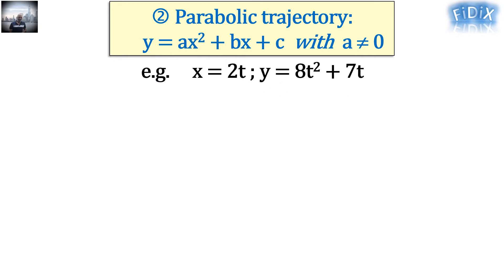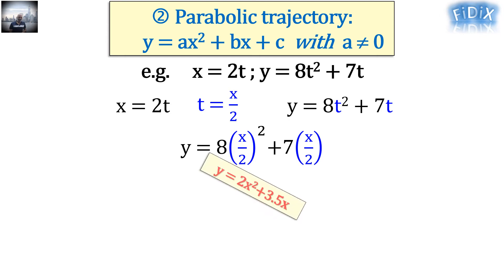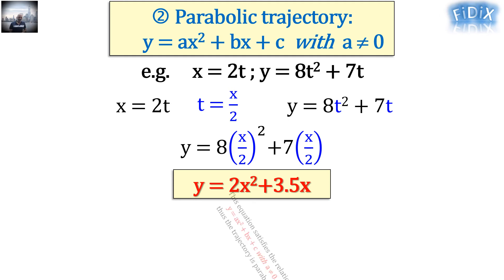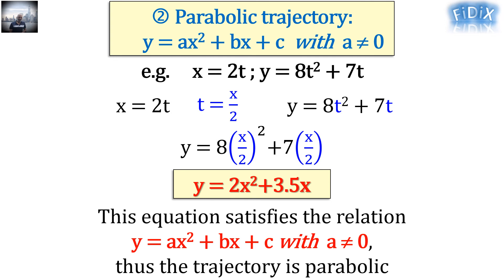For example, if we have a moving point with the following coordinates x equals 2t and y equals 8t squared plus 7t, and we are asked to determine its trajectory equation and nature, we can do what we did in the previous example. So we will find t as a function of x, then replace t by its expression in the parametric equation of y. In our case we got y equals 2x squared plus 3.5x, which satisfies the relation y equals ax squared plus bx plus c, with a different than 0. Thus, the trajectory is parabolic.